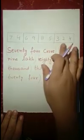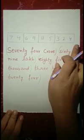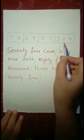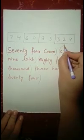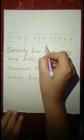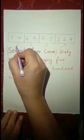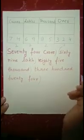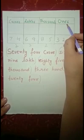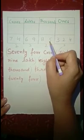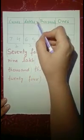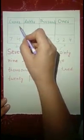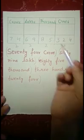Starting from the right, we first group the last three digits, then groups of two. The last three digits — 324 — come under the ones period. Then 85 comes under the thousands period. The two digits 69 come under the lakhs period, and 74 comes under the crores period.